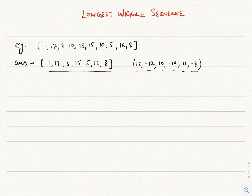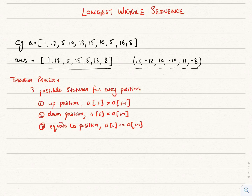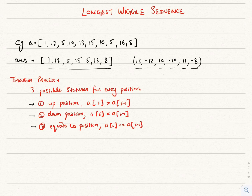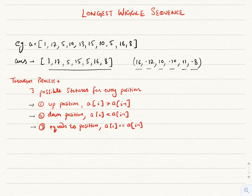Next, we'll see how to solve it optimally. For every position in the array, there are only three possible statuses: the up status, where the next element is greater than the previous element; the down status, where the previous element is greater than the next element; and the equals position, where consecutive numbers are equal. The trick is to use two variables, up and down, to keep track of the count, since we don't know whether the last element will go up or down.